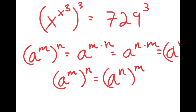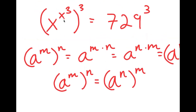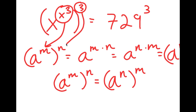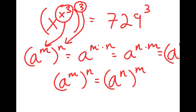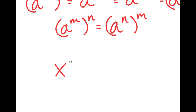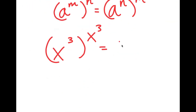So now from here, I have x to the power of x to the power of 3, to the power of 3. I can think of x to the power of 3 as m and 3 as n. If I switch the places of these two, I get x to the power of 3, to the power of x to the power of 3, and remember this is equal to 729 to the power of 3.